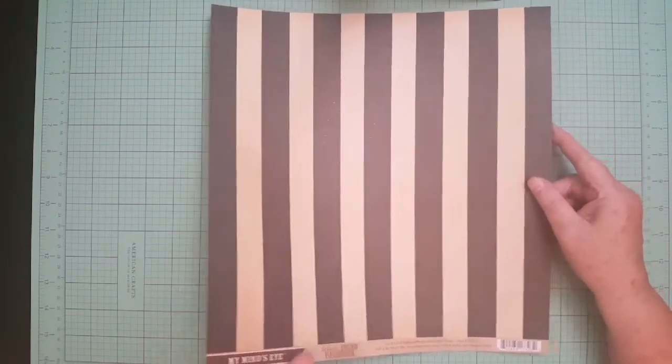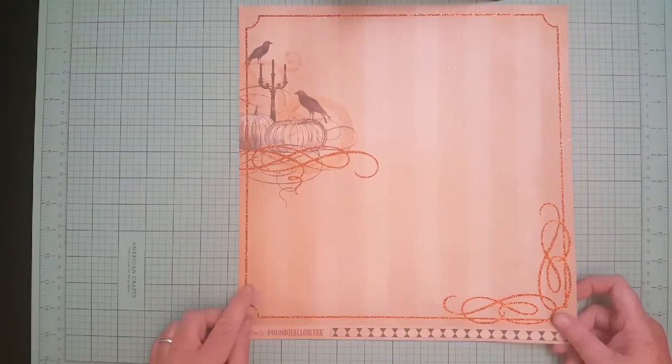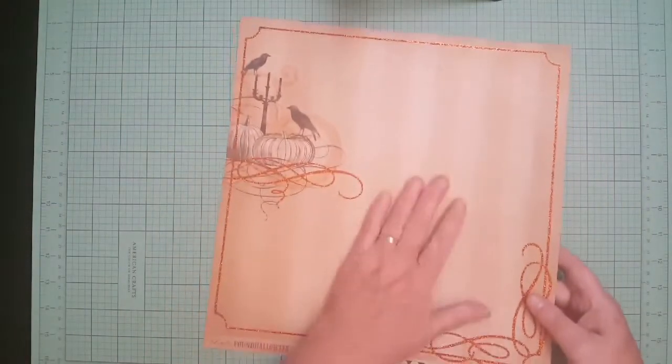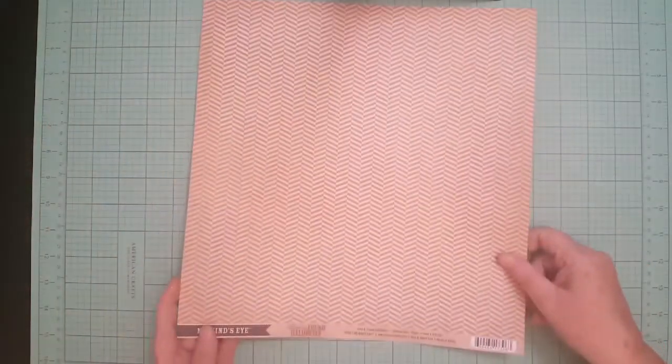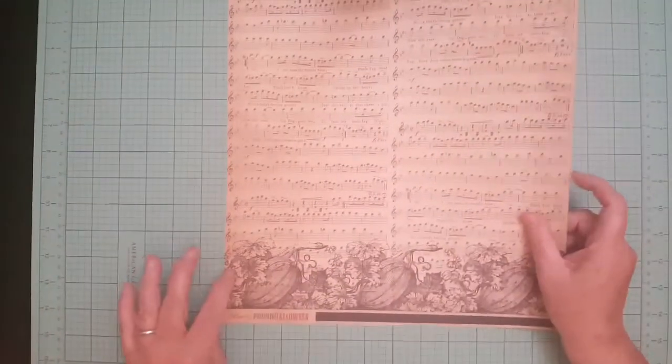This reminds me of Beetlejuice or Nightmare Before Christmas or something. Really cute. There's this one with the skulls. This one I could cut apart. It doesn't have glitter in it. This one has to be a background too, beautiful. I'm just going to use this side. Then there's this one, polka dotted craft with craft, that one I could cut apart and use for layering.